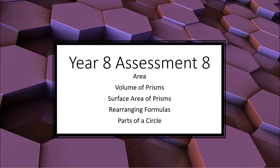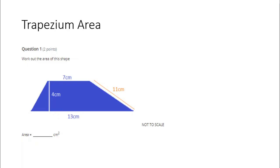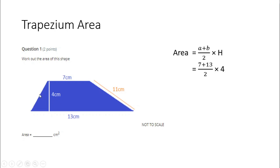All right, let's start taking this up. I hope you've had a chance to try that for yourself. For question one, work out the area of this shape. I hope you know the formula for the area of a trapezium. We average the two parallel lengths, so a plus b divided by 2, and then we multiply the average length by the height, very similar to the area of a rectangle. So we're going to do 7 plus 13 divided by 2 to get the average of these lengths, and then multiply that by the 4, the perpendicular height. Don't let that 11 fool you — that's not helpful at all for the area of a trapezium. So that's going to be 20 divided by 2 times 4, which is 10 times 4, which is 40 centimeters squared.